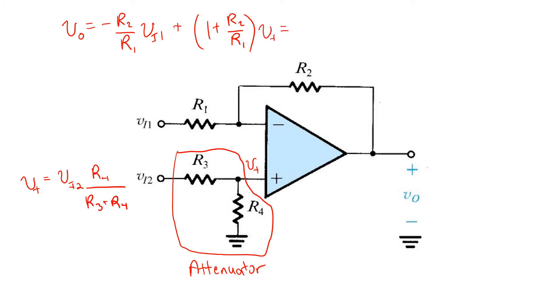Now, we can simply substitute in what we know about V+. That is, that it's R4 over R3 plus R4 times VI2. In order to make this a difference amplifier, we have to choose the ratio of R3 over R4 to be just right so that the gain with respect to VI2 is exactly negative the gain with respect to VI1.